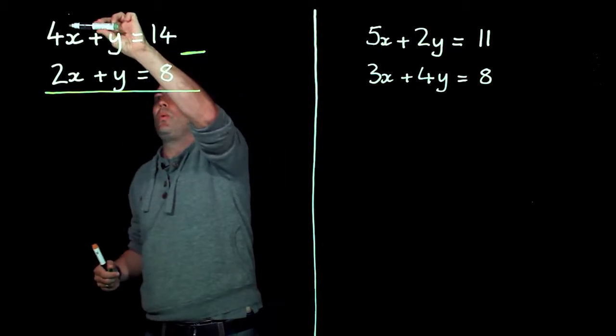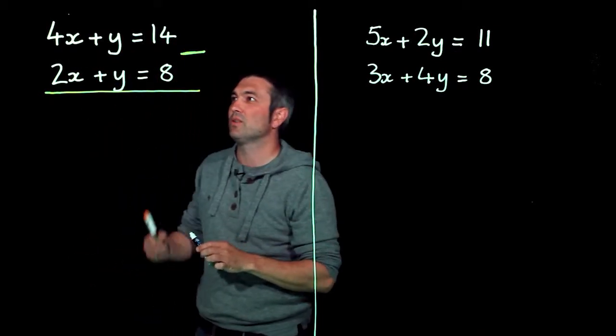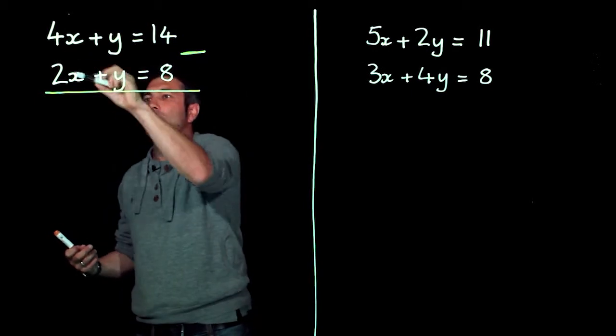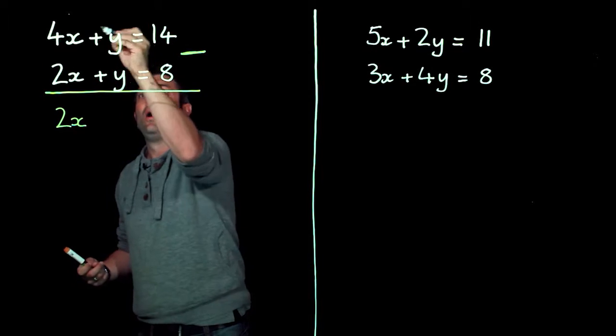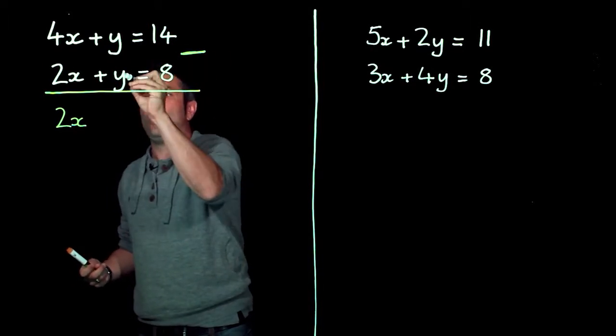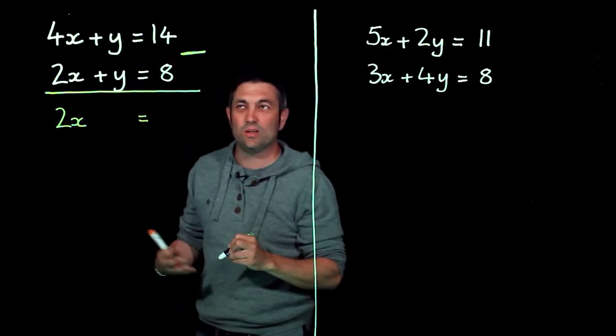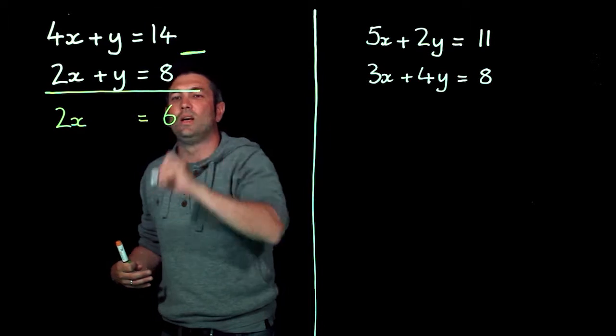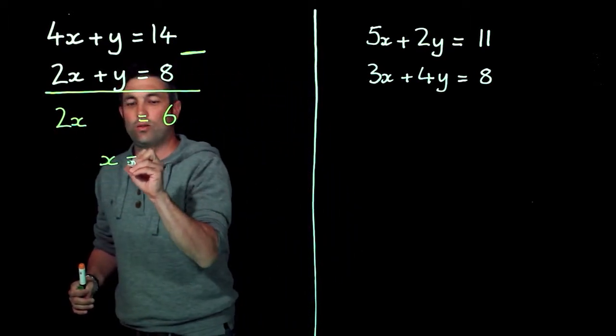Now I'm going to do the top one take away the bottom one because that will leave me with a positive value of x. So four x's take away two x's leaves me with two x. One y take away one y leaves me with no y's, which is excellent, so I've eliminated y straight away. And 14 take away 8 gives me 6. Now if two x is 6, one x is 3.